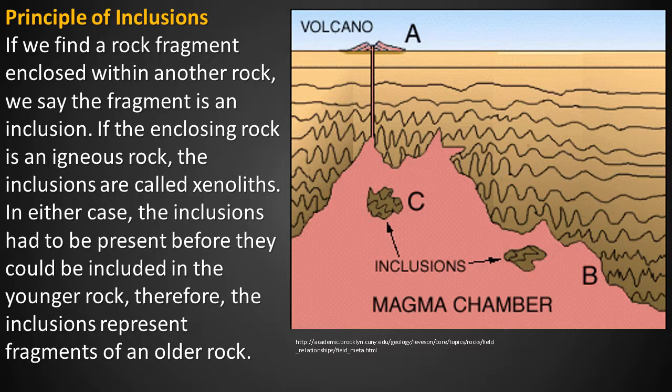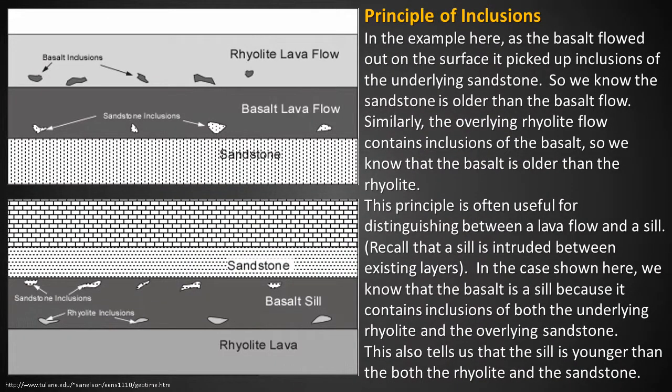Principle of inclusions. If we find a rock fragment enclosed within another rock, we say the fragment is an inclusion. If the enclosing rock is an igneous rock, the inclusions are called xenoliths. In either case, the inclusions had to be present before they could be included in the younger rock — therefore, inclusions represent fragments of an older rock. As the basalt flowed out on the surface, it picked up inclusions of the underlying sandstone, so we know the sandstone is older than the basalt flow. Similarly, the overlying rhyolite flow contains inclusions of the basalt, so we know the basalt is older than the rhyolite.